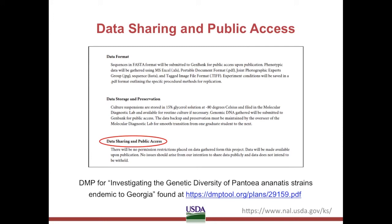As we reach the bottom of the first page of the DMP we are following, we see there are no restrictions placed on the data. Because this is federally funded, this is the default expectation. However, if your project has multiple funding sources or other contingencies, note those as needed. The only thing I would change here is to add the distribution method of the data. This plan indicated GenBank in the previous section about storage and preservation, and if that is the repository also planned for making the data accessible, they should note this here as well.